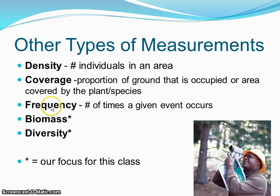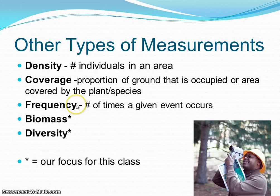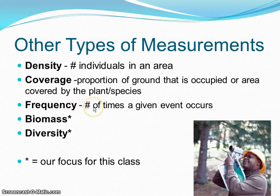Frequency is how many times an event occurs. We usually think about frequency more in terms of natural disasters like fires and that sort of thing. We can think about it as interactions having a frequency, like how often these creatures mate. We don't really talk about frequency that often — sometimes we can just talk about how frequently organisms show up in an environment.